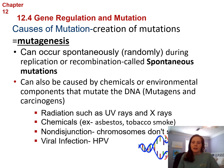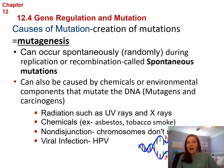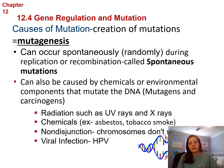Anytime something creates a mutation we call that mutagenesis. Mutations can occur spontaneously or randomly — this happens when DNA is replicated and DNA polymerase makes a mistake on a single base. Most of the time these are neither harmful nor helpful; they're neutral. We call those spontaneous mutations.